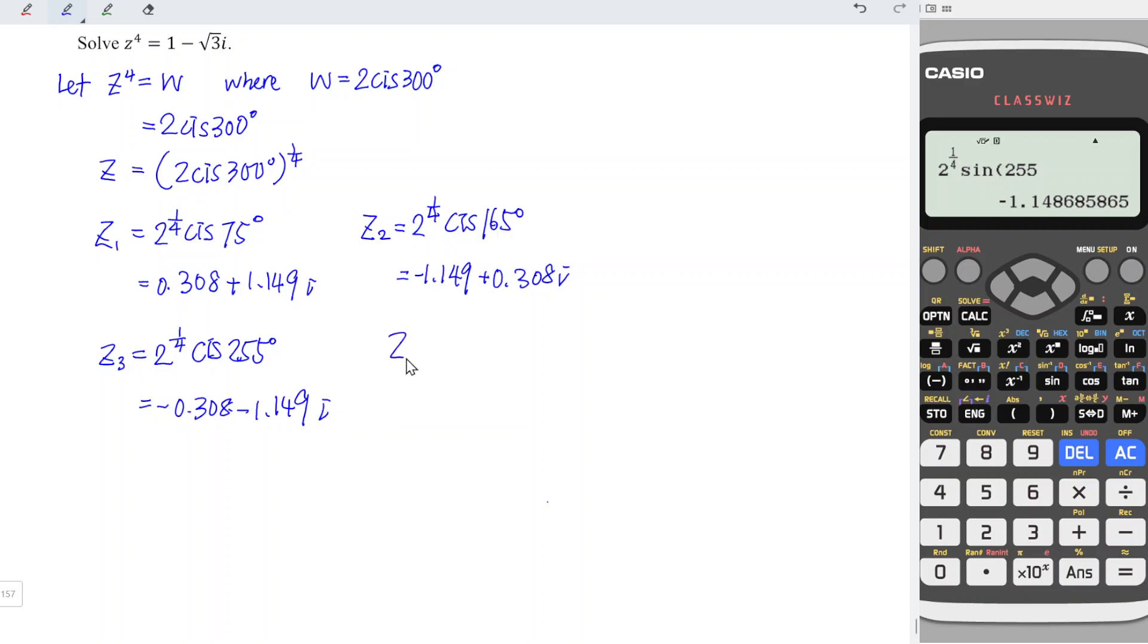And for the last root, by using the same idea, we have 2 to the power of 1 over 4, cis 255 increase another 90 degrees, which is equal to 345 degrees. Again, make use of whatever we have entered previously, change 255 to 345. And this is equal to positive 1.149. And for the sin part, or the imaginary part, we should have equal to negative 0.308i.